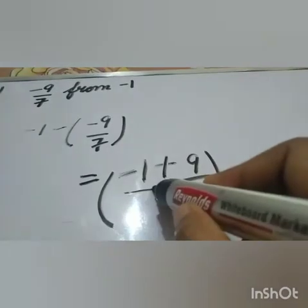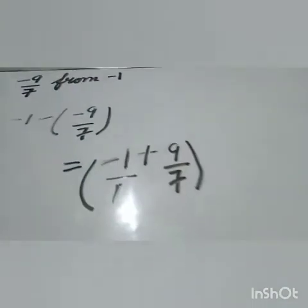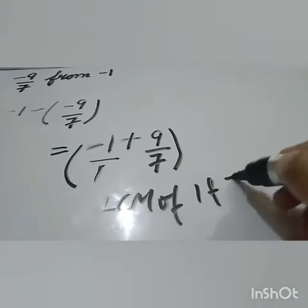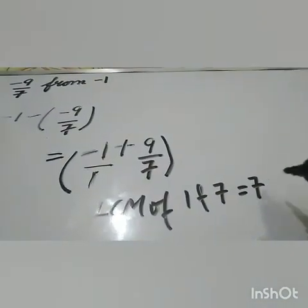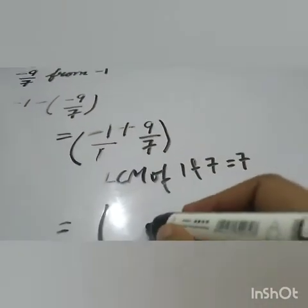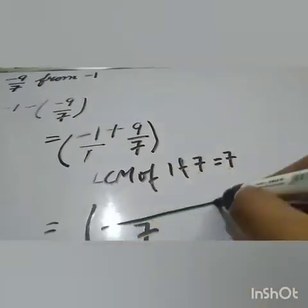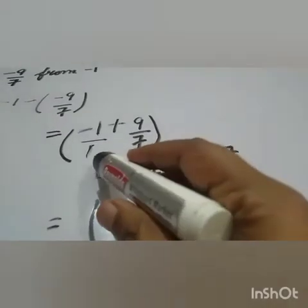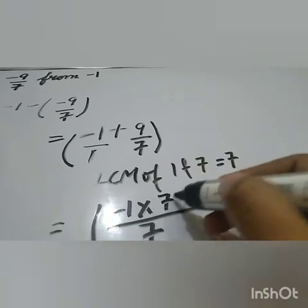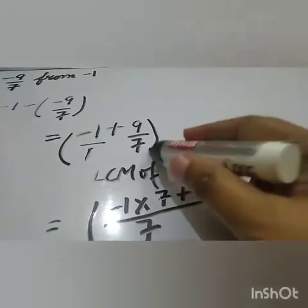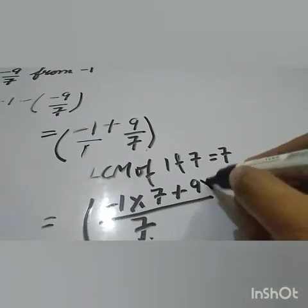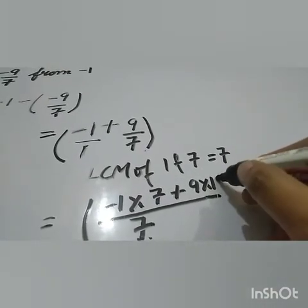In the denominator there is nothing, that means write 1. Now LCM of 1 and 7 equals 7. 7 divided by 1 equals 7. Minus 1 multiply by 7 plus 7 divided by 7 equals 1. There is 9 multiply by 1.